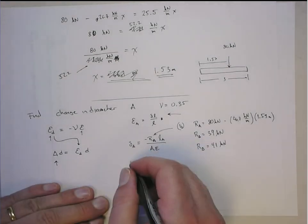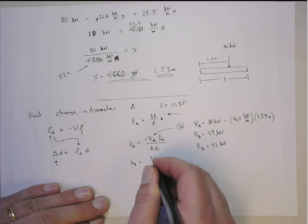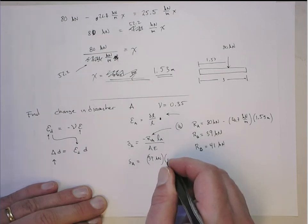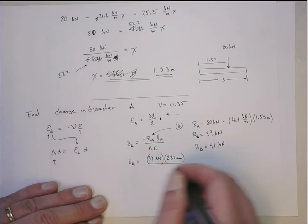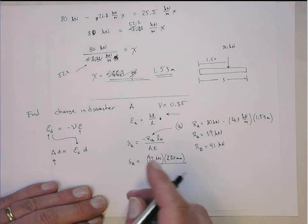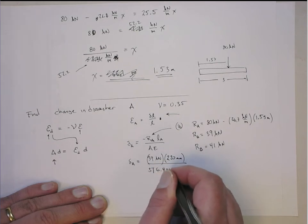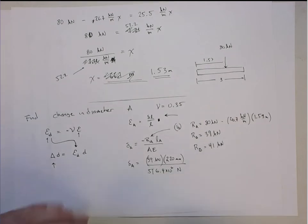So delta A is equal to 39 kilonewtons times its original length, which is 220 millimeters, over AE. And we figured out AE before was 516.4 times 10 to the 6 newtons, or meganewtons if you will.